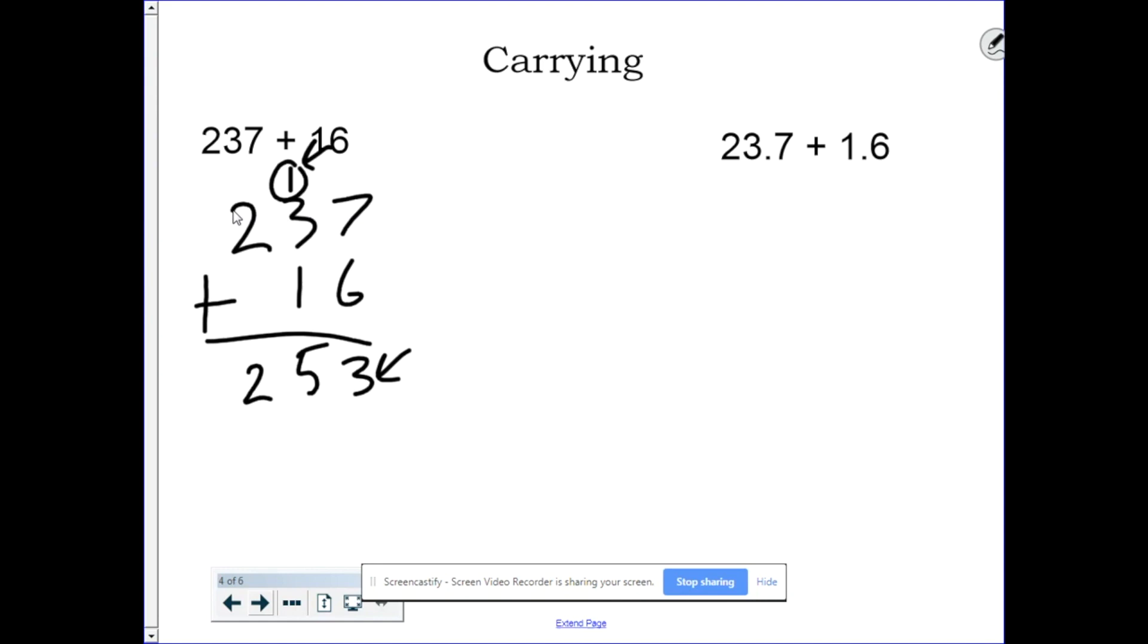Let's go over and look at the decimal version. 23.7 plus 1.6. Same digits as before. Let's see if we get the same digits afterwards. 7 plus 6 is 13. One, three. 1 plus 3 is 4. Plus one more is 5. And then 2 plus 0 is 2.